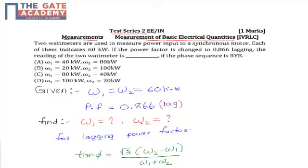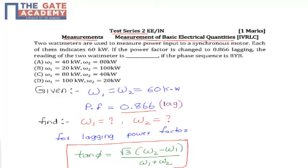For lagging power factor, the formula to calculate the wattmeter readings is: tan φ = √3 × (W2 − W1) / (W1 + W2). This is the formula to calculate the 2 readings of the 2 wattmeters for lagging power factor.